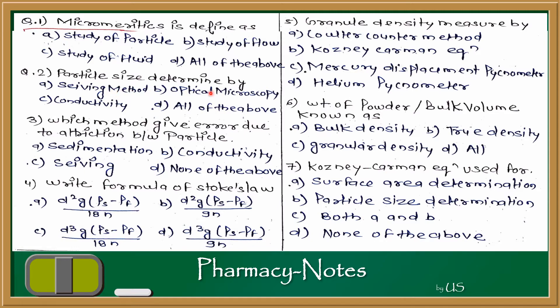Question 2: Particle size is determined by which method? Options are: sieving method, optical microscopy, conductivity method, and all of the above. There are four methods to determine particle size: optical microscopy, sieving method, sedimentation method, and conductivity/Coulter counter method. The answer is D — all of the above.